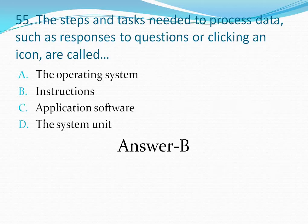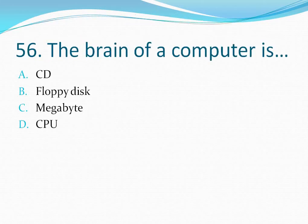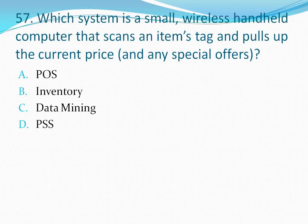Question number 56: The brain of a computer is — the brain of a computer is CPU, so the correct answer is option D — CPU.